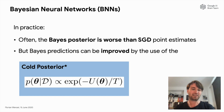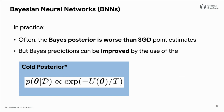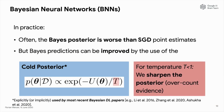There is some hope. You can actually improve Bayesian predictions by using what we call the cold posterior. The cold posterior is the standard Bayesian posterior with an additional temperature parameter T. For T equal to one, you get back the original posterior. But for T less than one, we sharpen the posterior, which can be interpreted as over-counting the evidence. Such cold posteriors are used by most recent Bayesian deep learning papers.